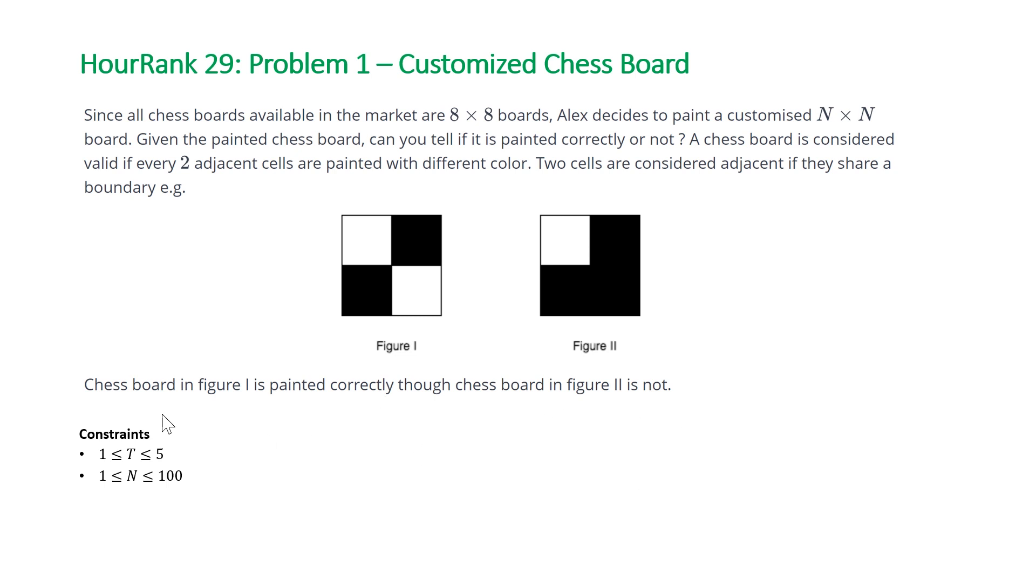And for this problem, we're going to be given between 1 to 5 test cases, which is t, and then n, the size of our board in terms of the number of rows and columns, is going to be between 1 and 100. So we don't need to worry about time complexity too much for this problem.